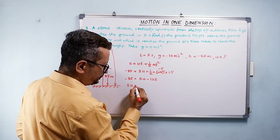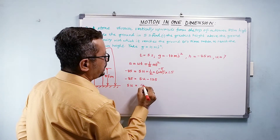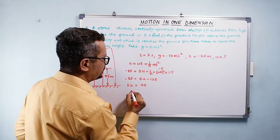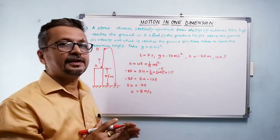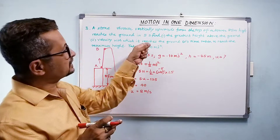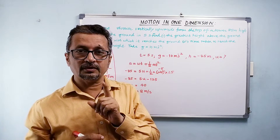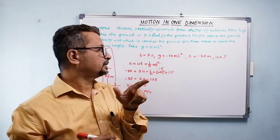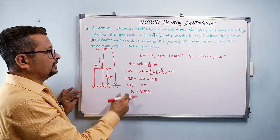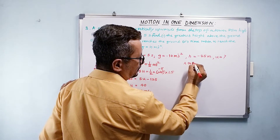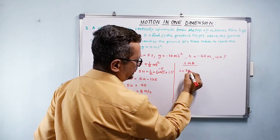So 5u minus 125 equals minus 85. Therefore 5u equals 40, and u equals 8 meter per second. That is the initial velocity. But this is not what was asked first — the first part asks for the greatest height above the ground.